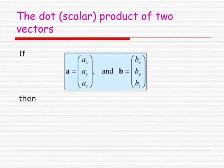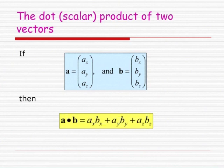To calculate the dot product or scalar product of two vectors in component form — A is (AX, AY, AZ) and B is (BX, BY, BZ) — we multiply the components in turn and add them together: A·B = AX·BX + AY·BY + AZ·BZ.